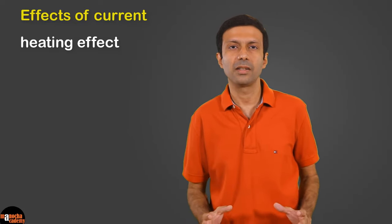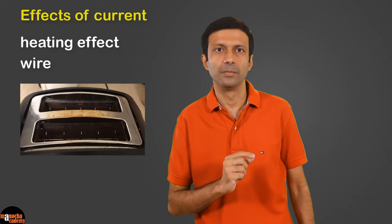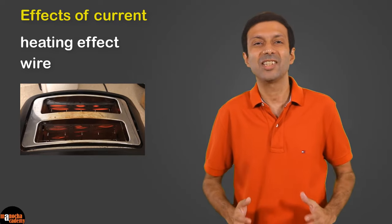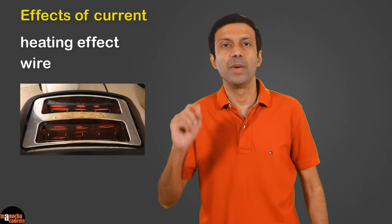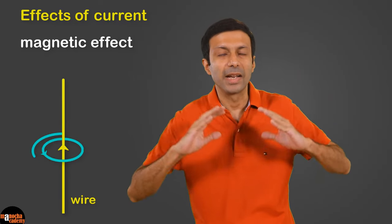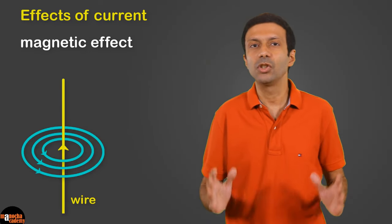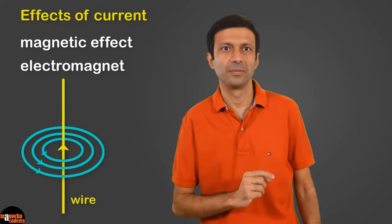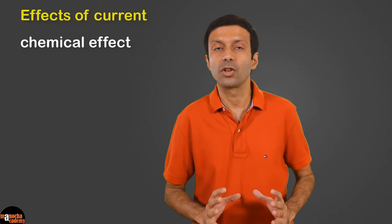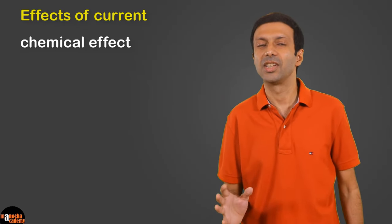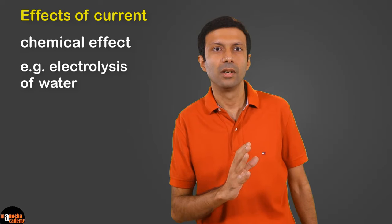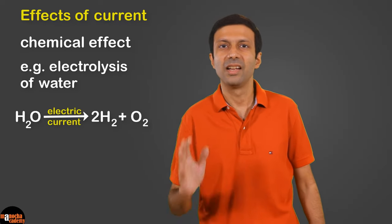An example of heating effect is the filament in the toaster. When electric current passes through the filament in the toaster, it heats up and that's how you can toast the bread. In the magnetic effect of electric current, when electric current passes through the wire, it produces a magnetic field around it, and an application of this is electromagnets. In the chemical effect of current, when electric current passes through a substance, it can cause a chemical reaction. An example is electrolysis of water — when electric current passes through water, it decomposes water into hydrogen and oxygen.